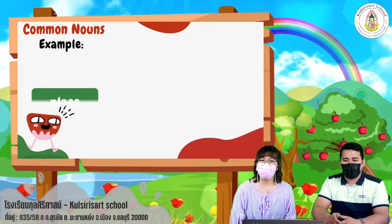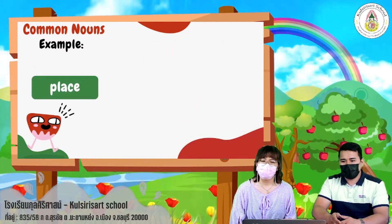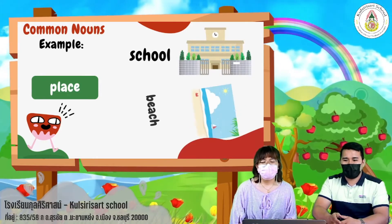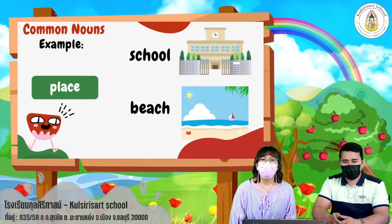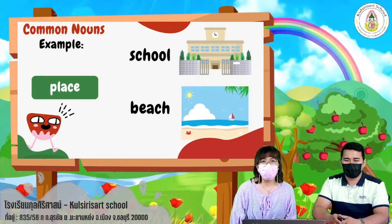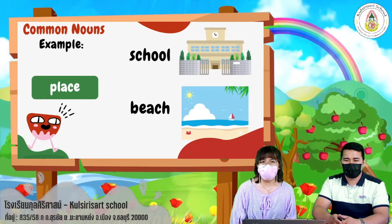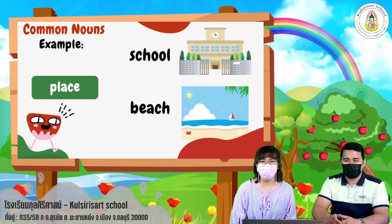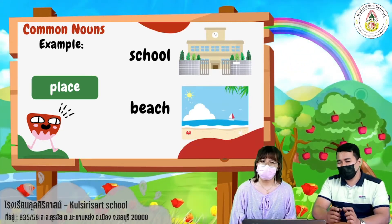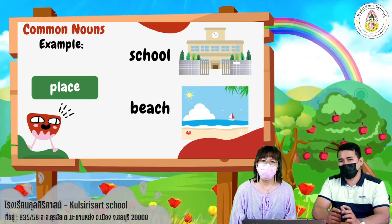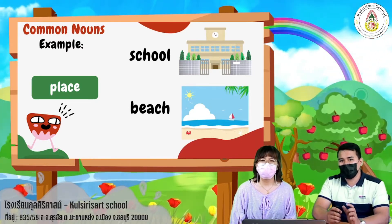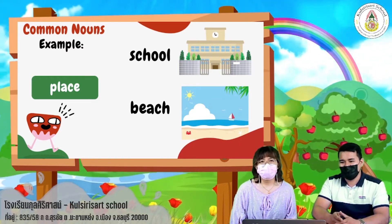Next example, place — we have school and beach. As you can see in our examples, the starting letter of the noun is in small letter.